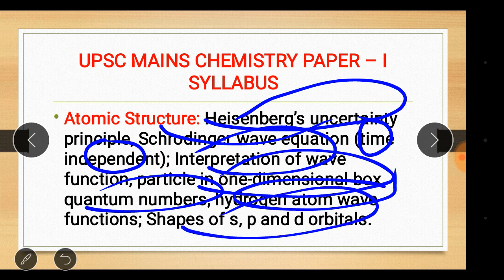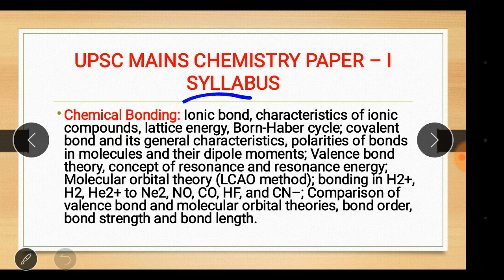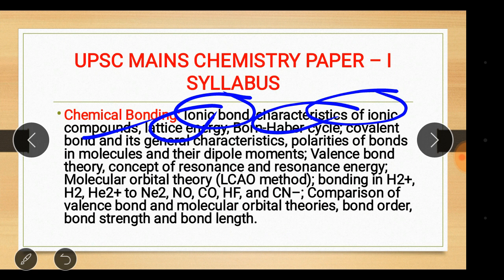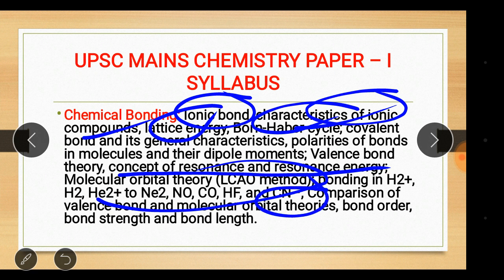Chemical bonding: ionic bond, characteristics of ionic compounds, lattice energy, Born-Haber cycle, covalent bond and its general characteristics, polarities of bonds in molecules and their dipole moments, valence bond theory, concept of resonance and resonance energy, molecular orbital theory — LCAO method, bonding in H₂⁺, H₂, He₂⁺ to Ne₂, NO, CO, HF and CN⁻. Comparison of valence bond and molecular orbital theories, bond order, bond strength and bond length.